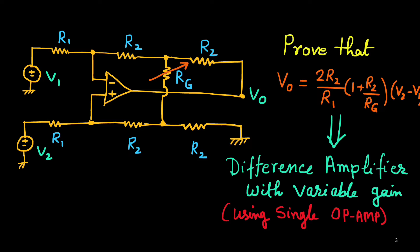This is a difference amplifier with variable gain using a single op-amp. In the next lecture we will discuss one circuit for a difference amplifier with variable gain using two op-amps, where we will find that the gain is proportional to RG.